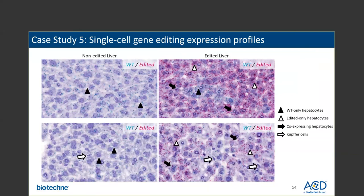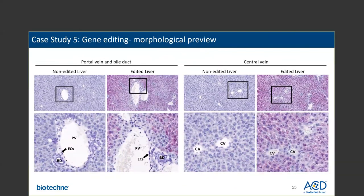To understand whether these signals were specific to hepatocytes and not nonspecifically expressed in other cell types, we looked at the portal vein endothelial cells and epithelial cells of the bile ducts. In both non-edited and edited livers, we did not see any signal in any of these cells. The same was true for the central veins. This means these signals are very specific, and this methodology can be applied to different gene editing detection studies. It can help visualize bio-distribution of edited versus non-edited cells as well.